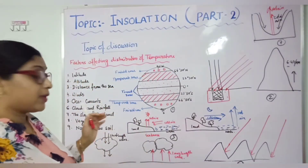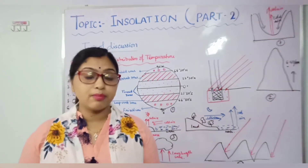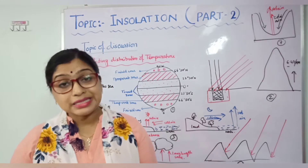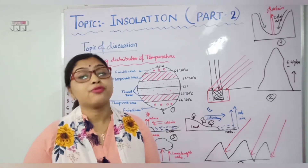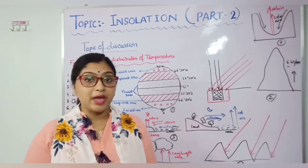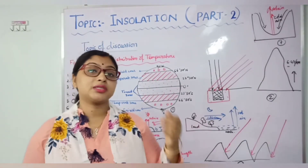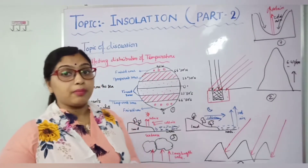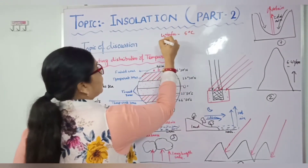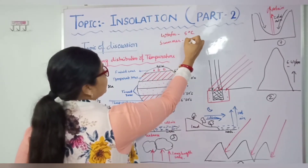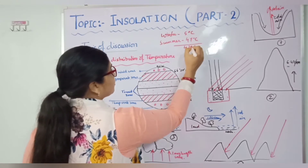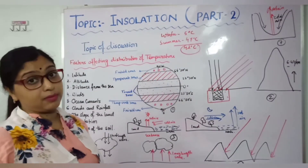Next is distance from the sea. Whenever any place is situated far from any water body, it will have extreme climatic conditions — the temperature variation will be high. In that part, we can see a continental or extreme type of climate. For example, in winter the temperature may go down to 3 to 5 degrees centigrade, and in summer the temperature can reach 47 degrees Celsius. So the variation between winter and summer is around 42 degrees centigrade — the range of temperature is 42 degrees centigrade.